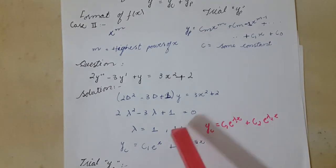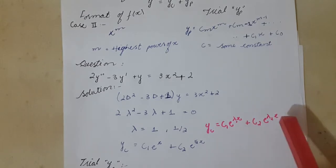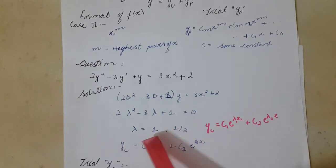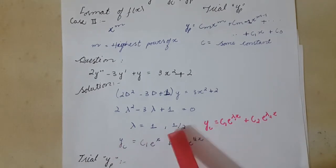We can find roots by quadratic equation or factorization or by calculator. We know that yc = c1·e^(λ1·x) + c2·e^(λ2·x). We will simply put the values of 1 and half in this equation and we will get our yc.